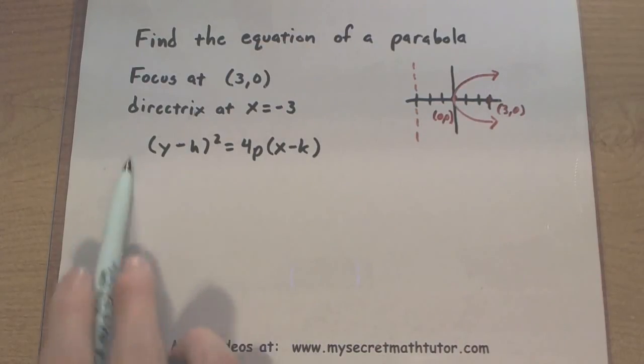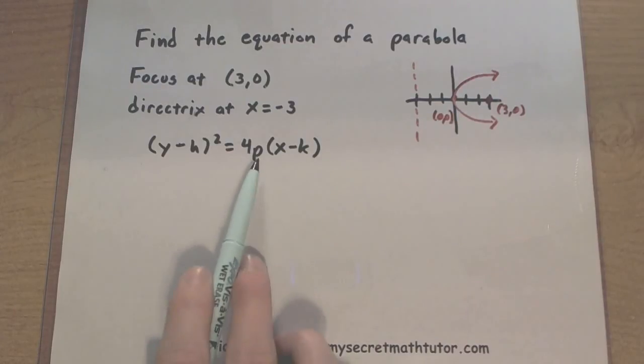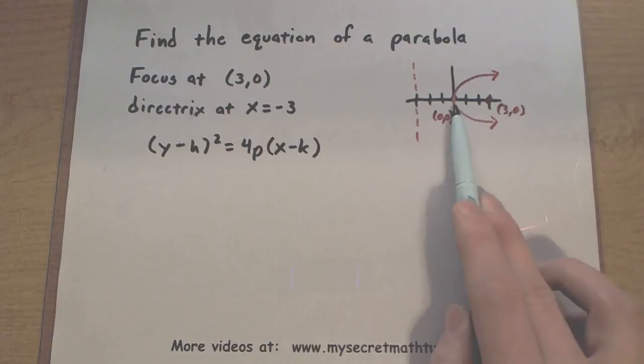Now, the reason why I'm having my y term squared is because it is on its side. h and k will come from the location of the vertex, and this p value is actually the distance between the vertex and the focus.